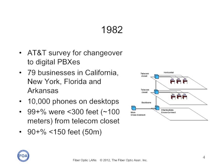What they found was that practically all of these phones were less than 300 feet — that's about 100 meters — from the telecom closet, and 90% were less than 50 meters, or 150 feet. This became a very important survey for later use.